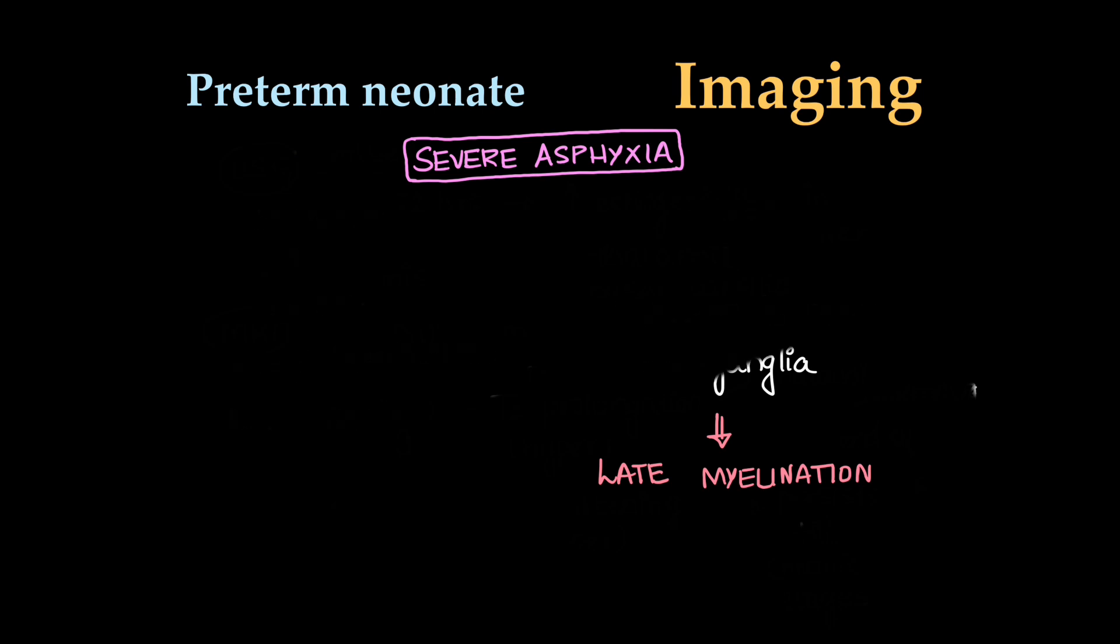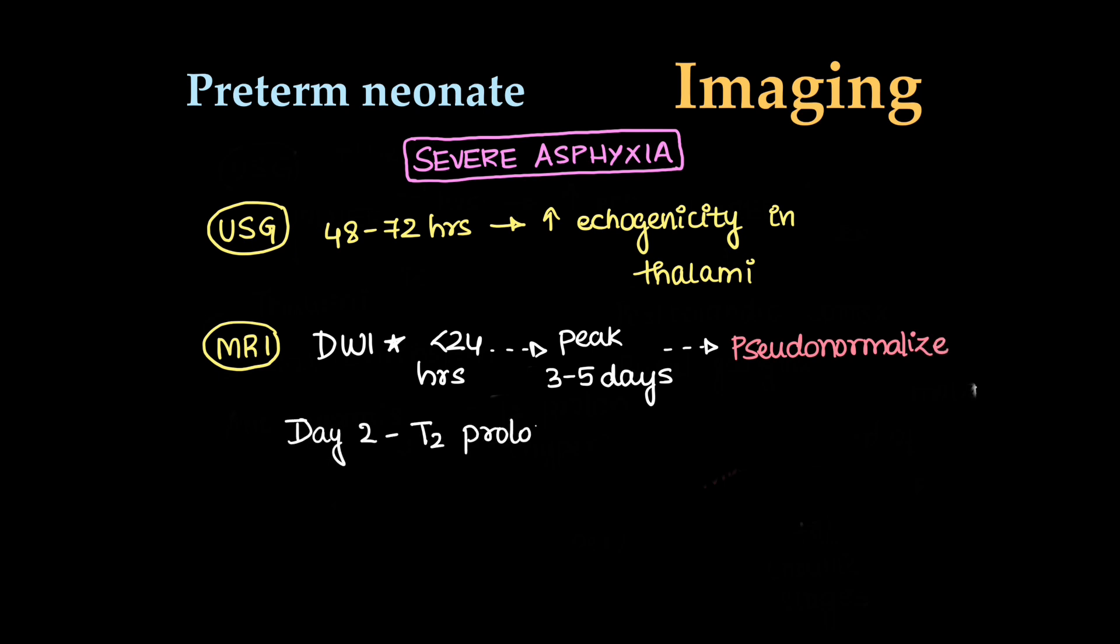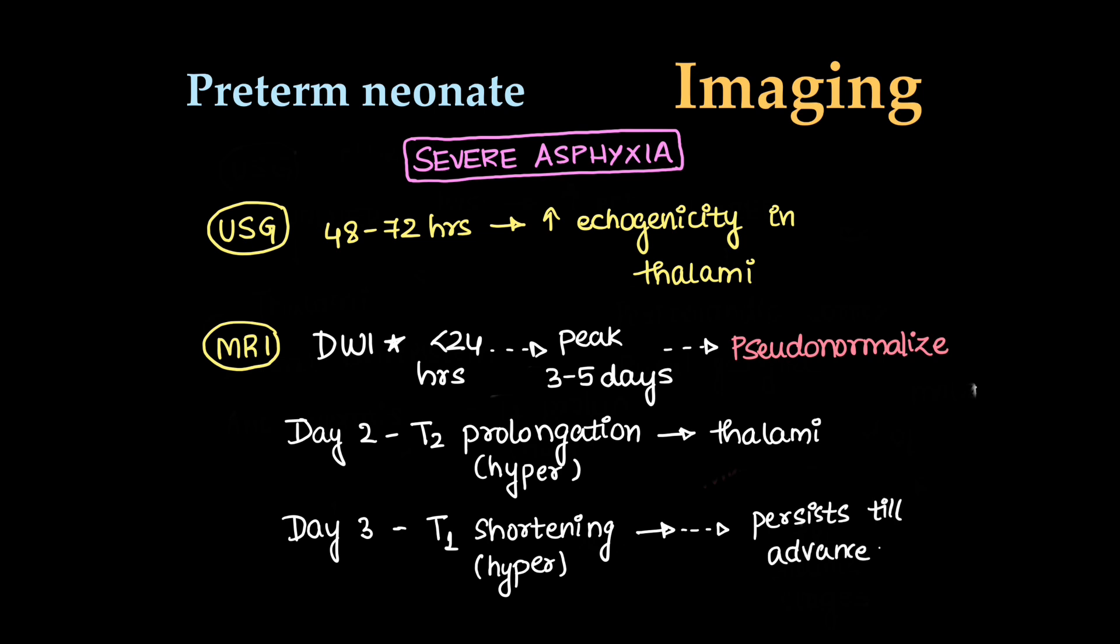We will use modalities like ultrasound and MRI. Ultrasound can be used within 48 to 72 hours. There will be increased echogenicity in thalamus. MRI will show diffusion-weighted imaging within 24 hours will be positive, peaks in 3 to 5 days, and pseudo-normalizes at the end of first week. On day 2, we can see T2-weighted imaging with T2 prolongation, hyperintensity in thalamus. On day 3, we can see T1 shortening, hyperintensity which will be seen up till chronic stages, persisting till advanced stages of the disease.